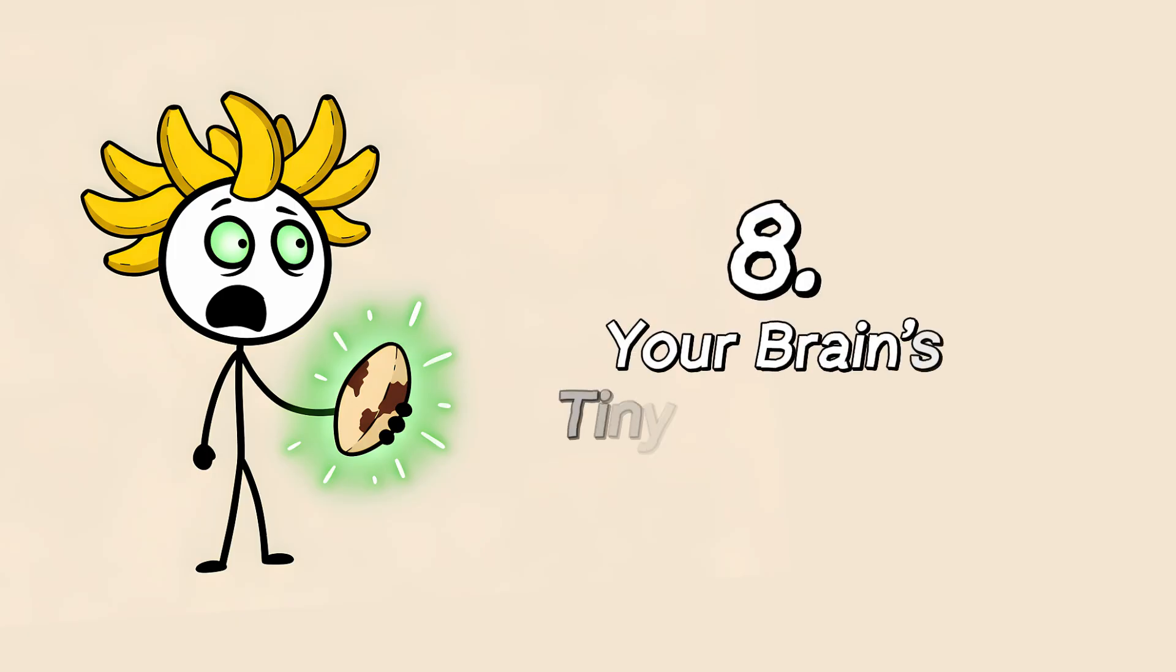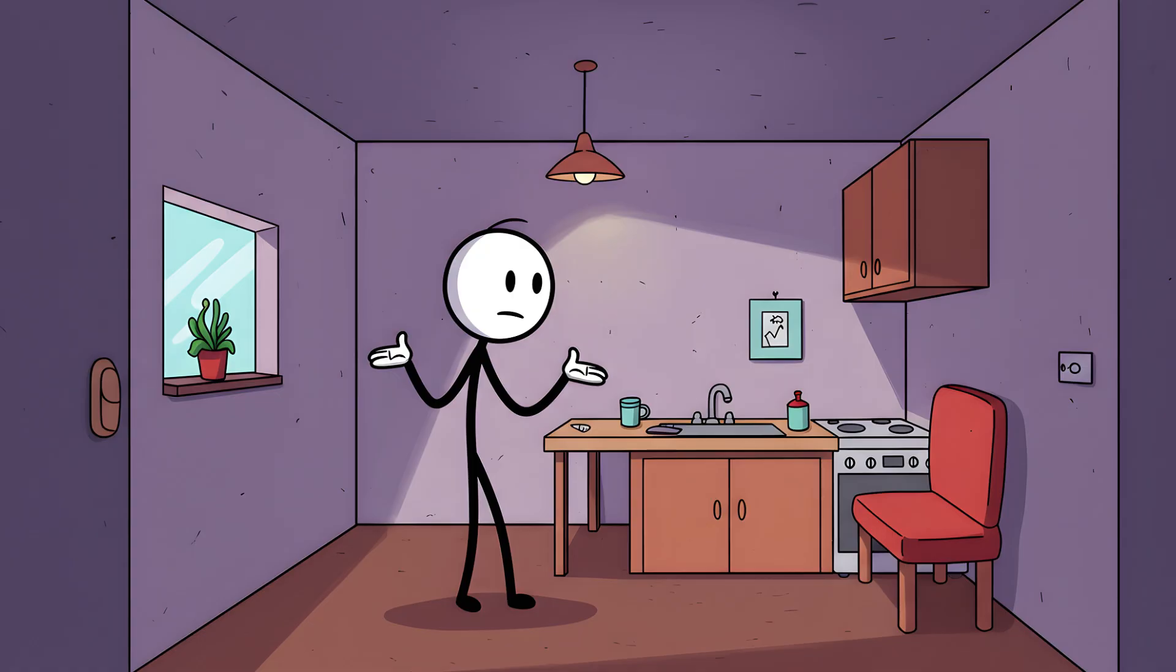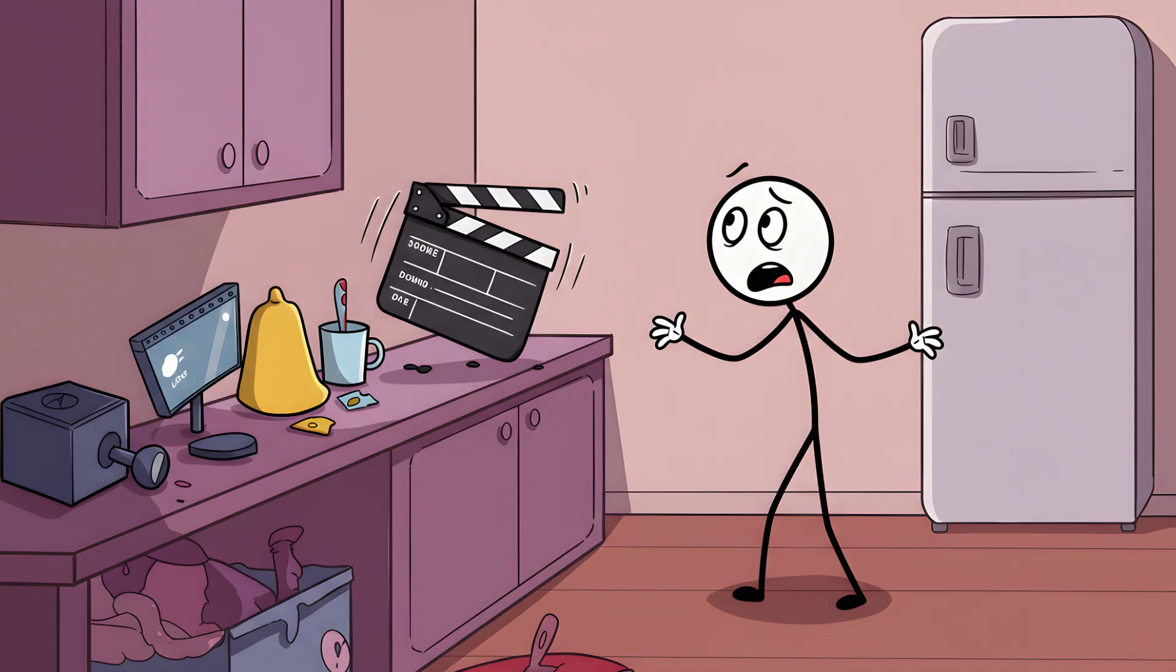Number eight. Your brain's tiny apartment. Why would our brains be designed with such a ridiculously inconvenient flaw? It all comes down to working memory. Think of your working memory as the ridiculously small countertop in a tiny studio apartment. It's the space where you put everything you're actively using right now. The thought about the chips, the plot of the show you're watching, the nagging feeling you forgot to pay your electric bill, and the name of that actor who was in that thing. There's not a lot of space up there.